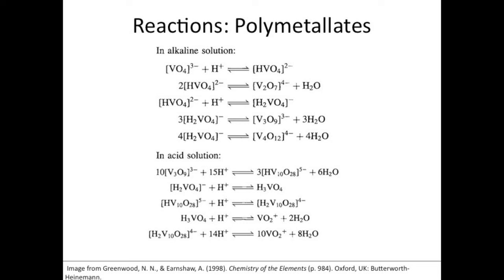Orthovanadates contain VO4 ions which is tetrahedral in shape. Pyrovanadates consist of two V2O7 ions. Metavanadates which depend on hydration, NH4VO3 contain infinite number of VO4 in tetrahedral shape. While KVO3·H2O consists of infinite chains of VO5 units which are trigonal bipyramidal in shape. Crystalline decavanadates are bright orange in color which is formed in acidic solution. V10O28 is made up of 10 VO6 which is octahedral in shape.